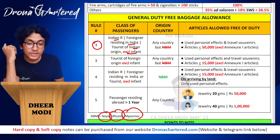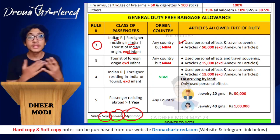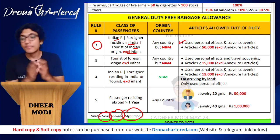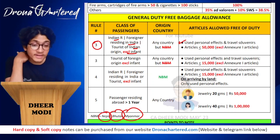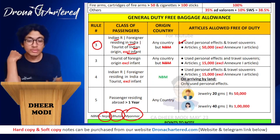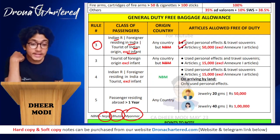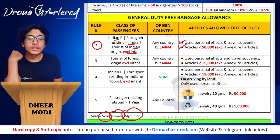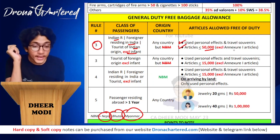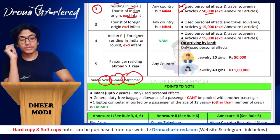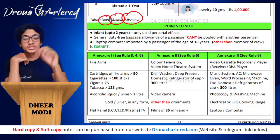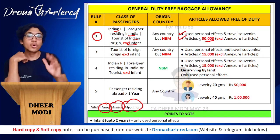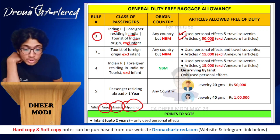Under Rule 3, the articles allowed free of duty are: used personal effects (e.g., your laptop, phones, personal belongings), travel souvenirs, and articles with a value less than or equal to ₹50,000 — excluding Annexure 1 articles. I have made an annexure of all specified articles, so excluding those Annexure 1 items, everything else will be allowed.